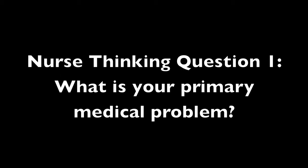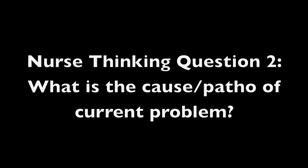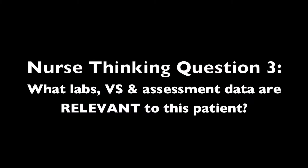Number one: what is your primary medical problem, in order to identify the needed priority setting? Number two: what is the underlying cause or pathophysiology of their current problem? Pathophysiology must be situated and understood by nursing students in every context to be deep thinkers and anticipate problems in practice. Number three: what labs, vital signs, and assessment data are relevant to this patient? Practicing with classroom scenarios helps students learn what data is essential and foundational, and apply it in the clinical setting.